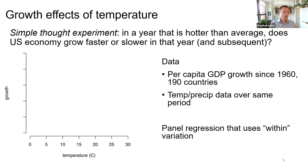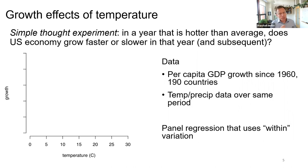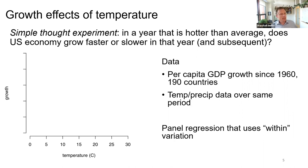This is a panel regression that doesn't try to compare Nigeria to Norway — it compares Norway to itself over time and Nigeria to itself over time as temperature fluctuates. Before showing the result, let's think intuitively: if you're in the coldest economies — Iceland, Mongolia — at really low temperatures, these economies might actually be better off in years that aren't terribly cold.